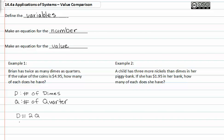Now we need to set up an equation. Now that we know that there are twice as many dimes as quarters and we've written our equation, we know that dimes are equal to ten cents. So ten cents times the number of dimes, plus twenty-five cents times the number of quarters, equals 495. Since I've shifted my decimals over to represent pennies, I also did that for the four dollars and ninety-five cents.